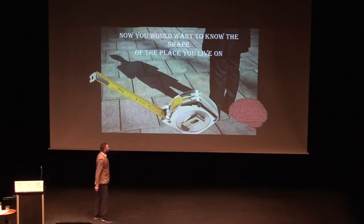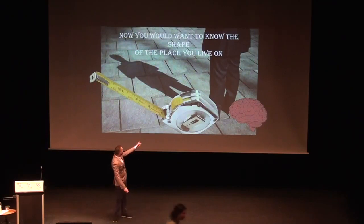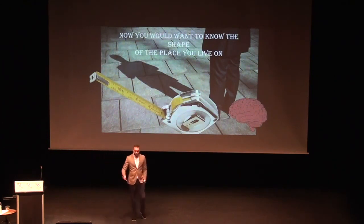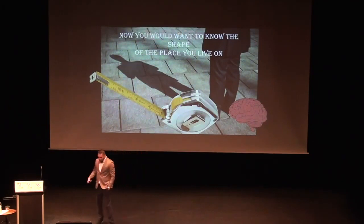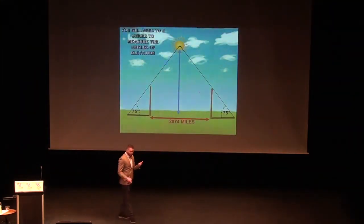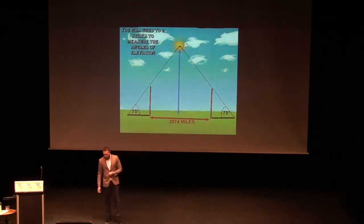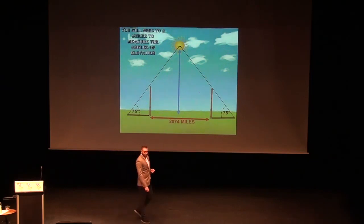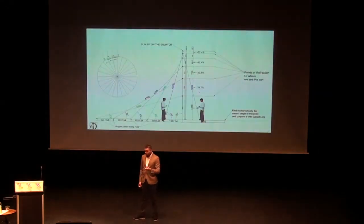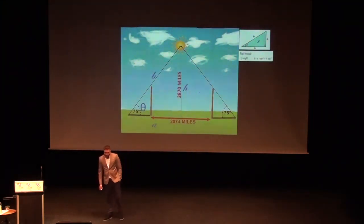As you got smarter, you would want to know the shape of the place you live on. Here is the problem: you only have a tape measure, a shadow, and probably your brain. What are you going to do with these things? How are you going to know the shape of the earth? To measure the distances between us and those lights in the sky, you're going to need at least two sticks. Imagine the distance between these two sticks is 2,074 miles and the angles of elevation are 75 degrees on both sides — then the distance to the Sun has to be 3,870 miles. That's the math.